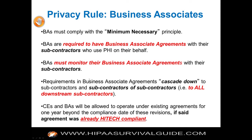Requirements in the business associate agreements cascade down to subcontractors recursively. Covered entities and BAs were allowed to operate under existing agreements for one year — that one year expired in September 2014. If you didn't update your business associate agreement per the omnibus rule, you needed to have an omnibus-rule-ready BAA, and you should have had it since September.